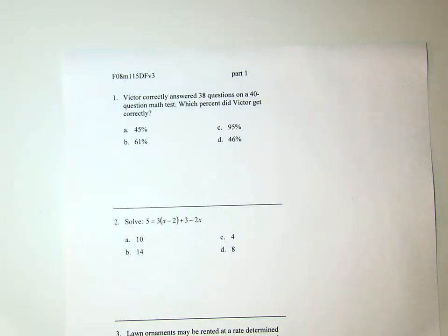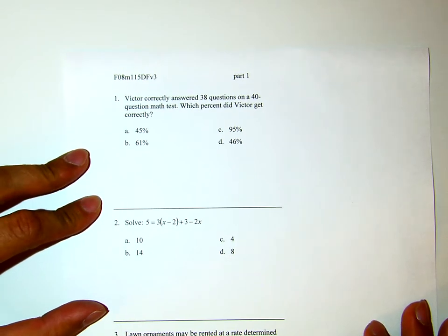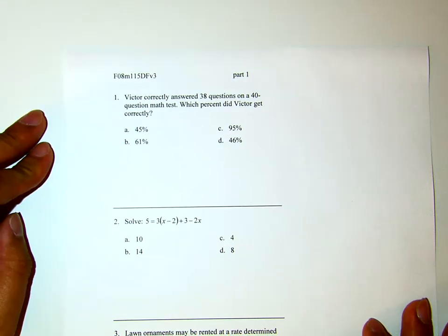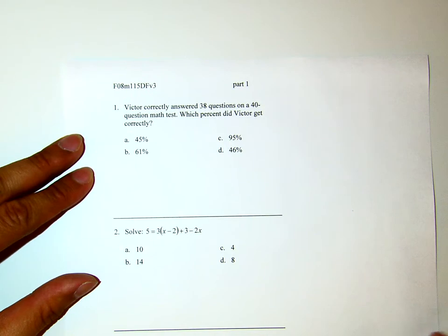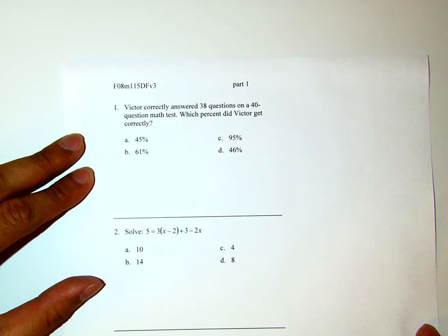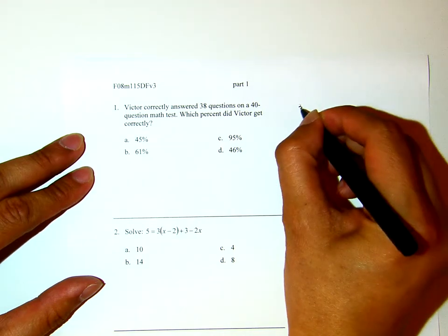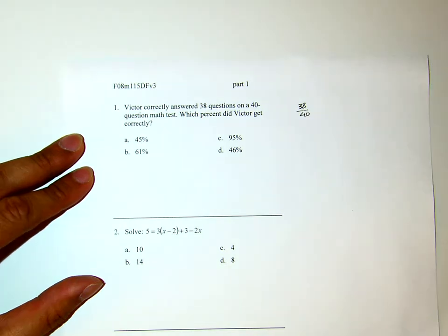Now we will work on Fall 2008 Math 115 Department Final version 3. In this video, I will do number 1, number 2, and number 3. Number 1: Victor correctly answered 38 questions on a 40-question math test. What percent did Victor get correctly? Now the part that Victor got correctly is 38 out of 40. Now this is a fraction. The question here wants us to do it in percent.